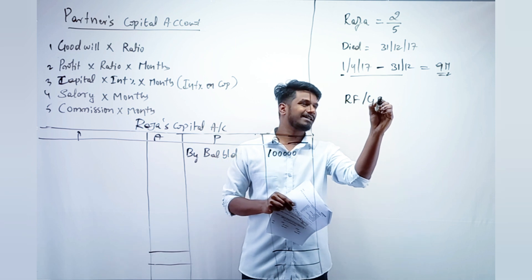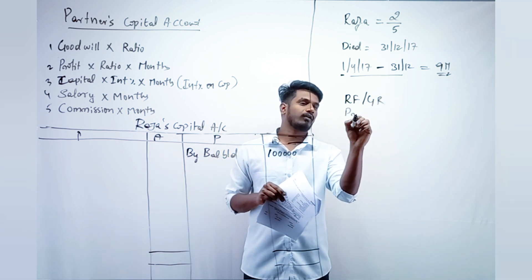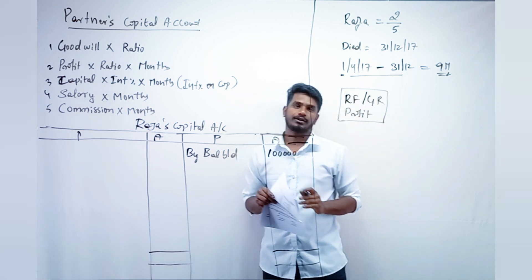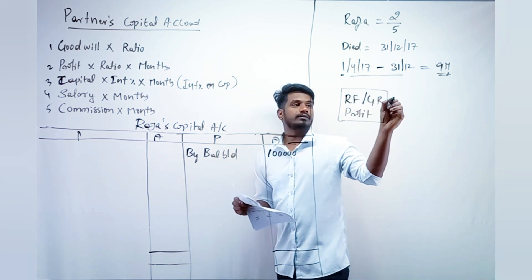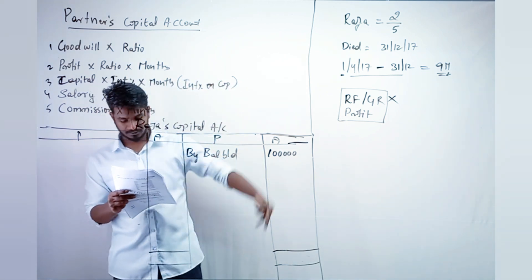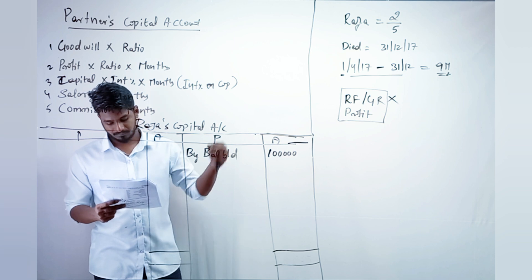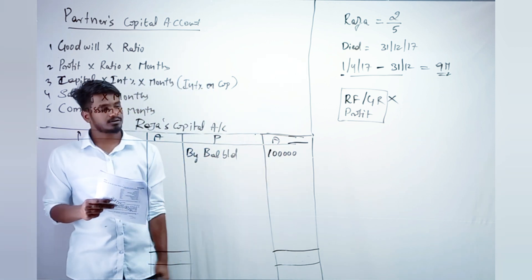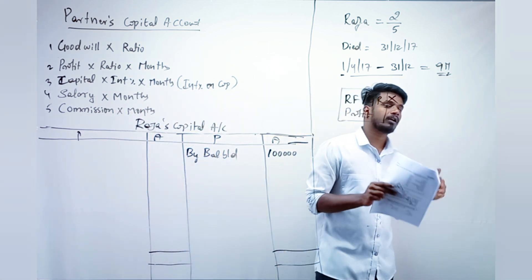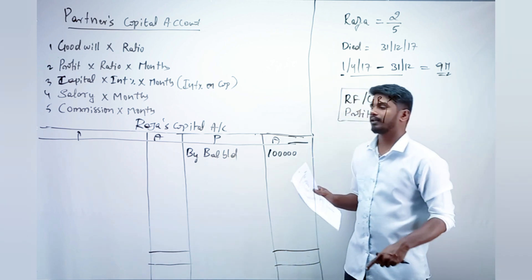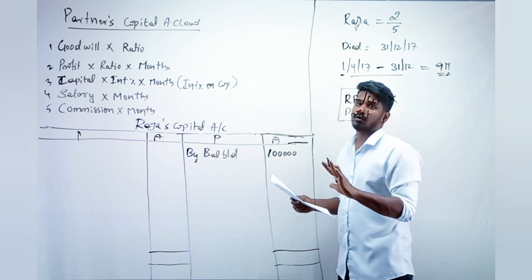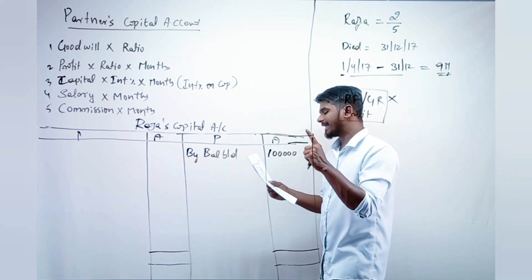In the balance sheet we should also look for reserve fund or general reserve, and also any profit. These two items are not present in this question, so no worries. With balance brought down we have recorded the capital; now we move to the additional information.